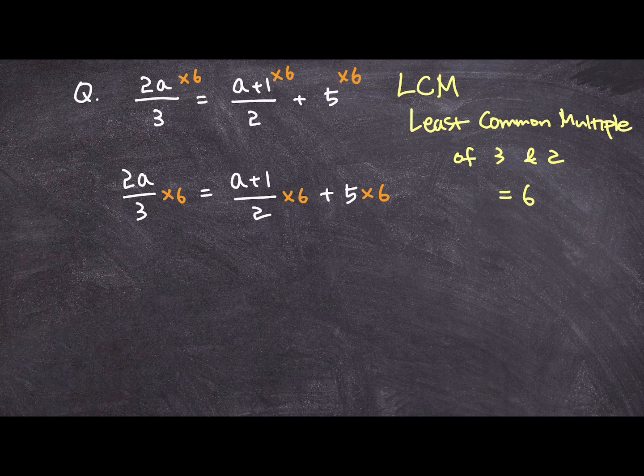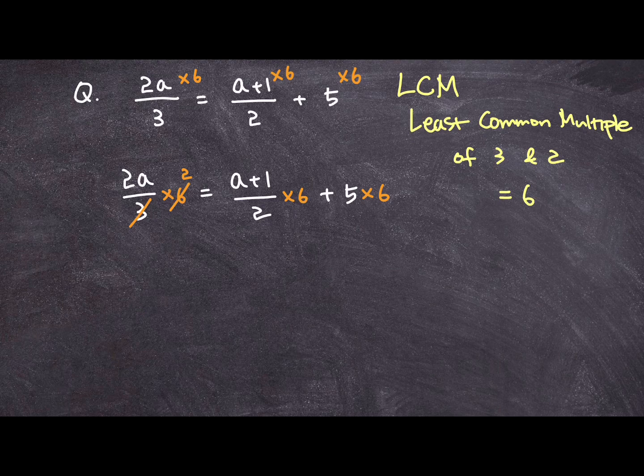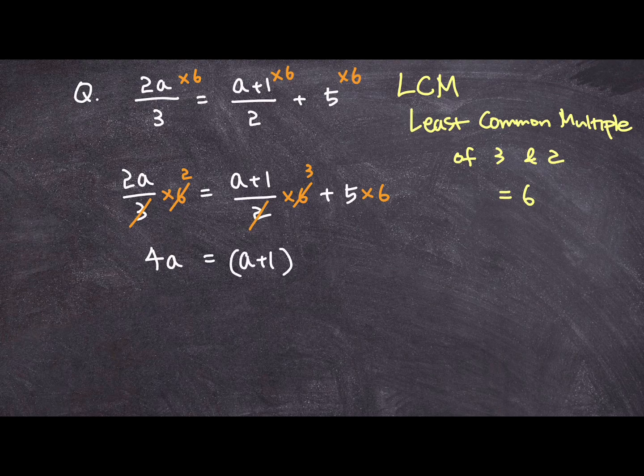Now for this first expression, I am going to be able to simplify like that and get 2a times 2 which is equal to 4a. And for the second variable, I can reduce it like so and be left with a plus 1 times 3.